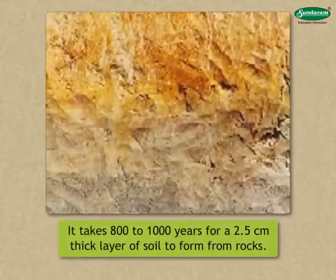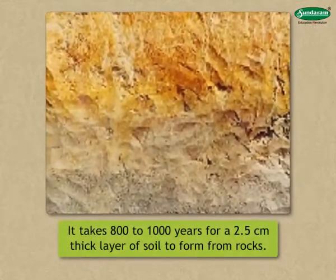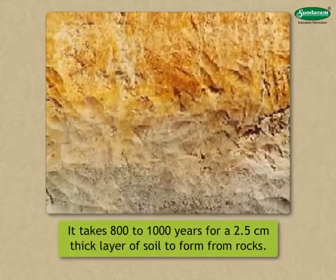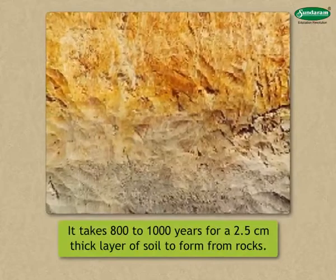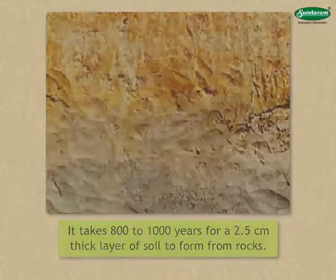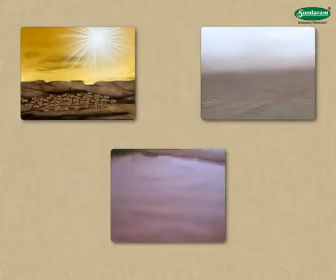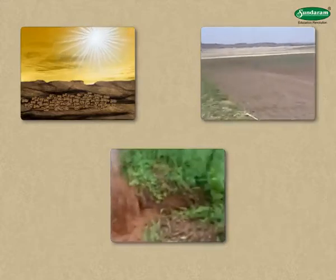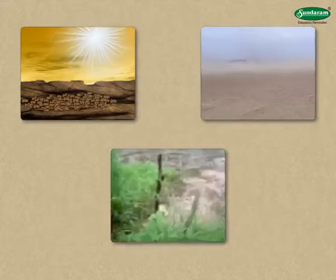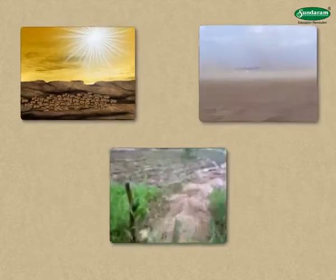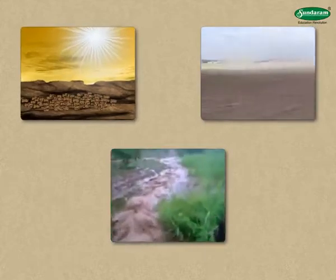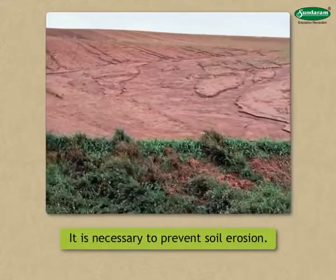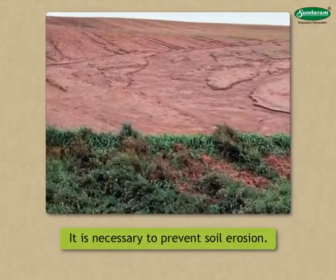It takes 800 to 1000 years for a 2.5 cm thick layer of soil to form from rocks. But rain, winds, and storms can carry away this soil in a very short period of time. This is a tremendous loss for us. That is why it is necessary to prevent soil erosion.